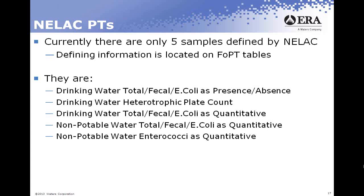On the non-potable water tables, you'll see total, fecal, and E. coli as a quantitative sample, listing total coliforms, fecal coliforms, and E. coli, again defined for two types of technology — MF and MPN for each. The PT providers are asked to treat those as two separate technologies for each analyte, with a manufacturing range of 20 to 2,400 CFU/100 mL or MPN/100 mL. Also on the non-potable water table, enterococci quantitative is listed by two separate technologies — once by MF and once by MPN.